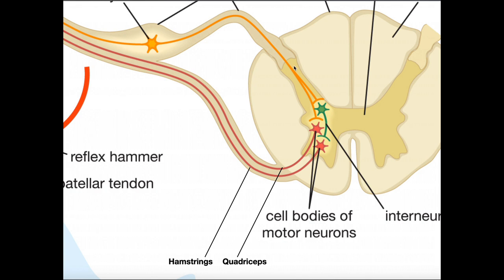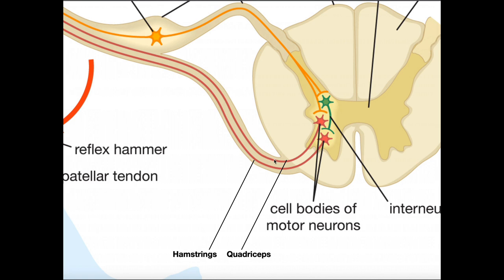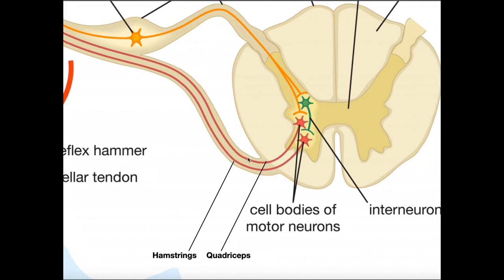In this reflex arc, the proximal axon extension of the muscle spindle sensory neuron actually divides — we have two synapses. The red axon on top is the motor axon going to the quadriceps, and the one on bottom goes to the hamstrings. So: quadriceps motor neuron on top, hamstrings motor neuron on the bottom.